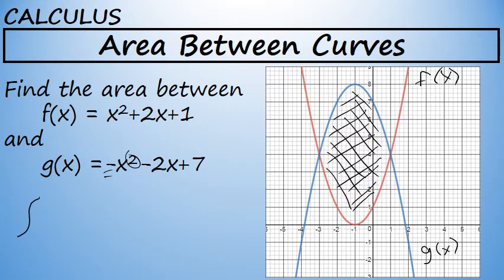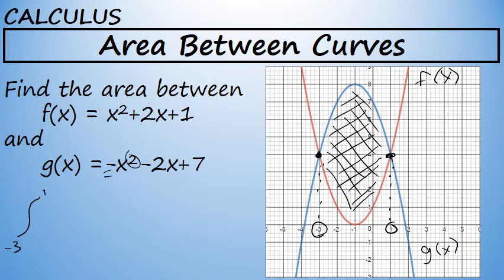The bounds on this integral will come from the x values where this region begins and ends. Looking from left to right, the enclosed region between these two parabolas begins at x equals negative 3 — that will be our lower bound — and ends at x equals 1, which will be our upper bound.